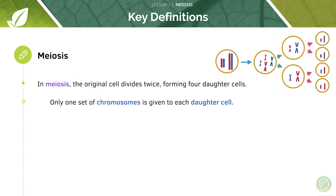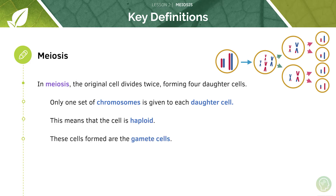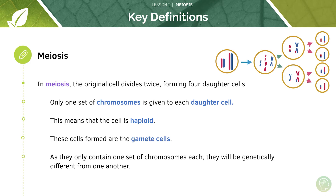Only one set of chromosomes is given to each daughter cell, which means that the cell is haploid. These cells formed are the gamete cells as they contain only one set of chromosomes each. They will be genetically different from one another. We call cells diploid if they have nuclei that possess pairs of homologous chromosomes, whereas we call cells haploid if they have nuclei that possess only one set of chromosomes.